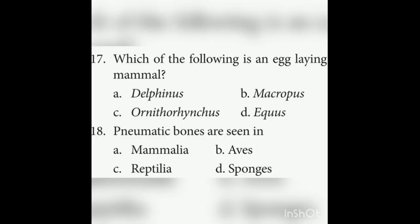Seventeenth question: Which of the following is an egg-laying mammal? Egg-laying means oviparous. The answer is Ornithorhynchus — it is an oviparous mammal. Eighteenth question: Pneumatic bones are seen in which organisms? Pneumatic bones have air cavities inside; they are lighter bones seen in Aves — birds.